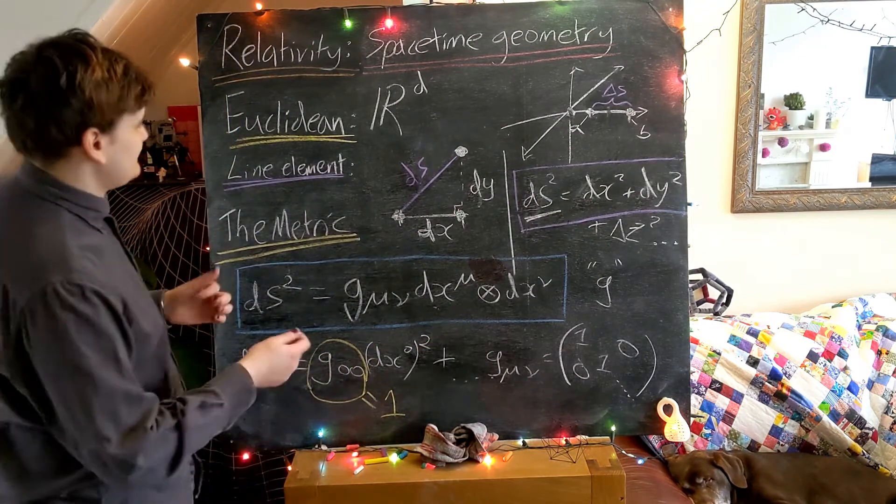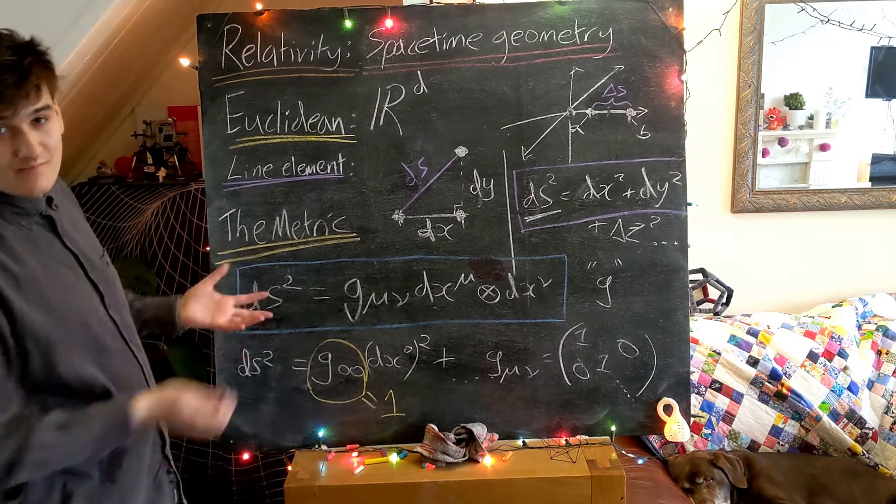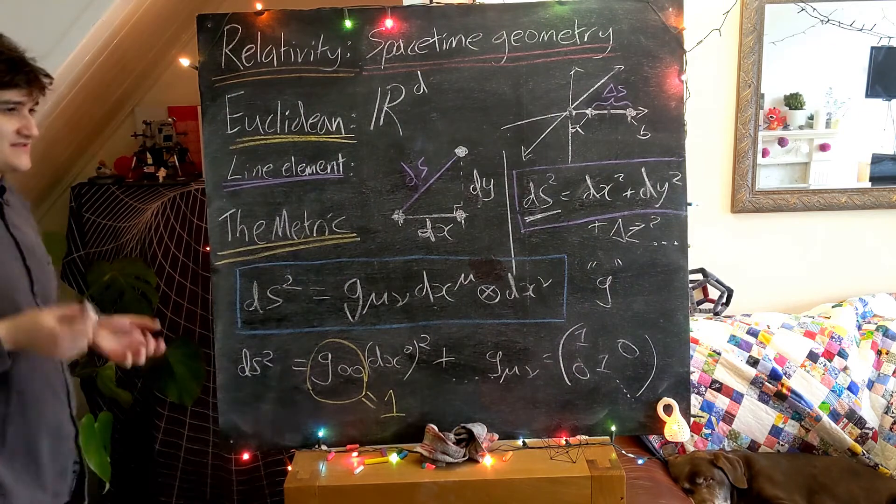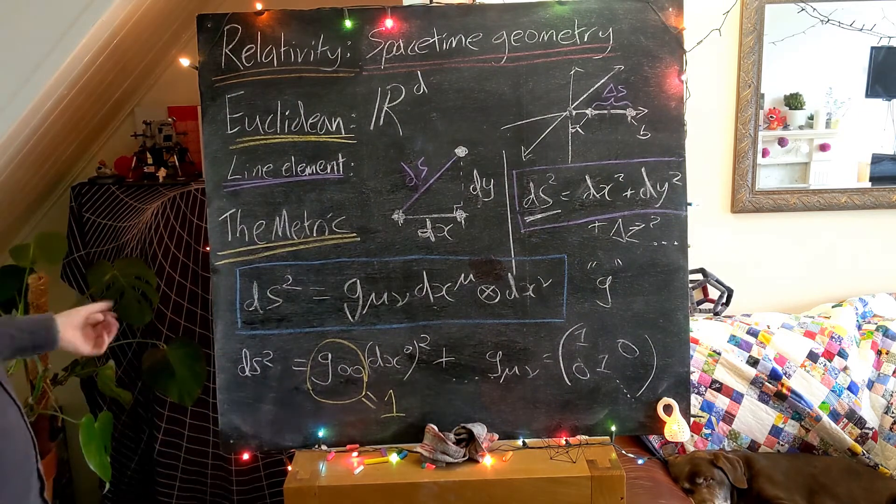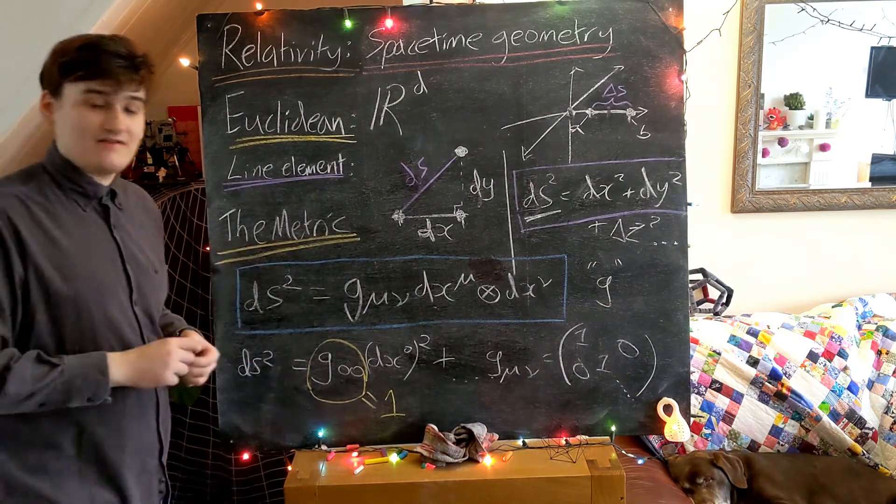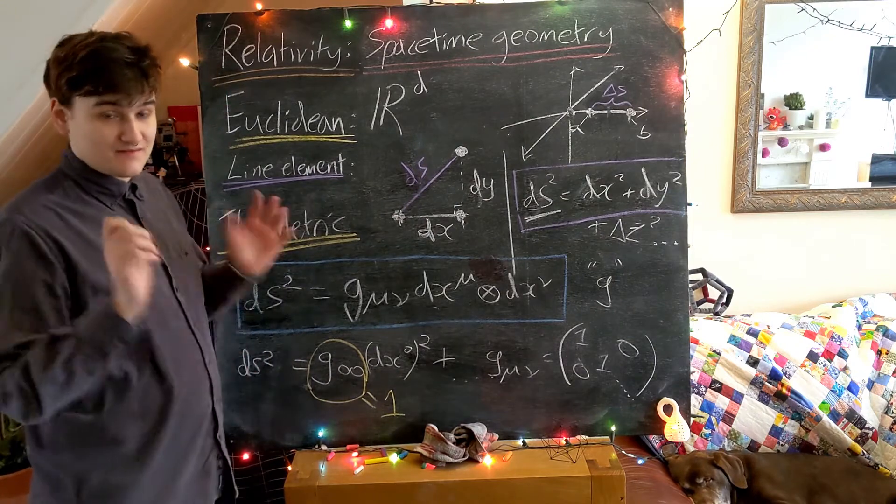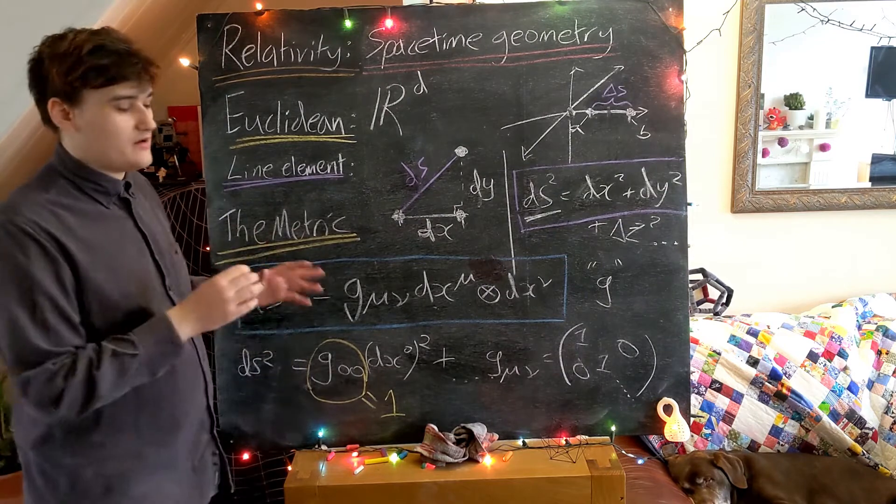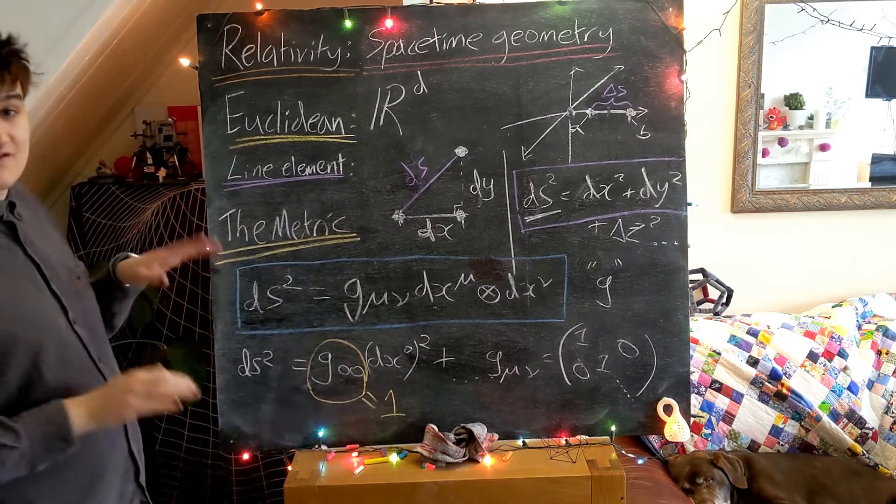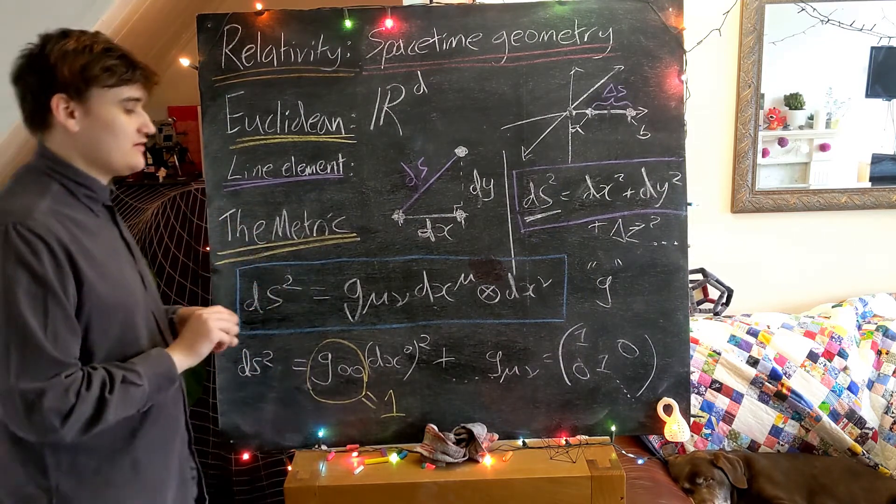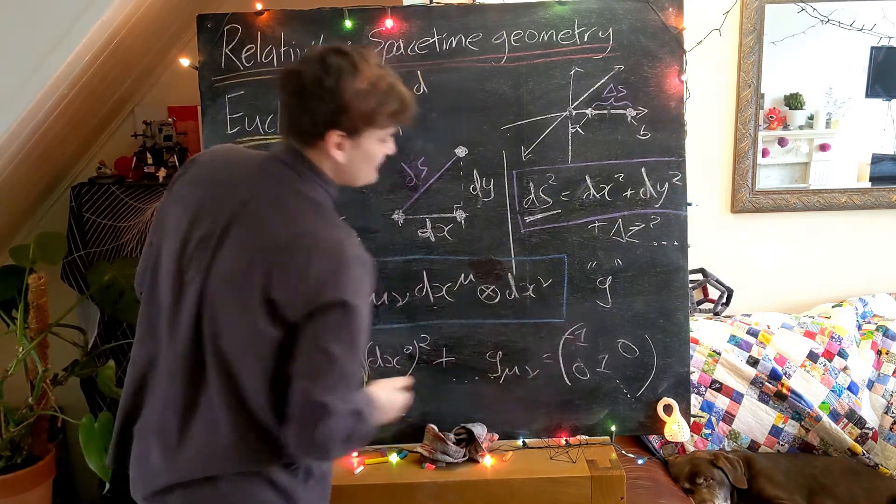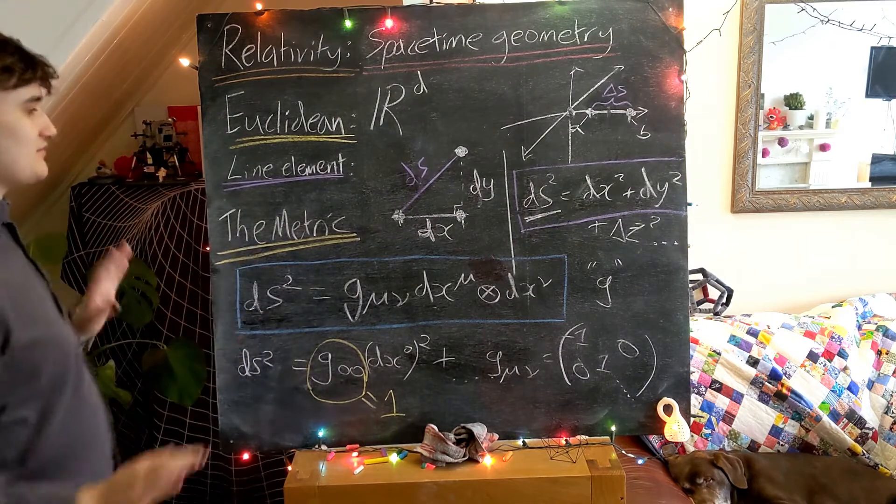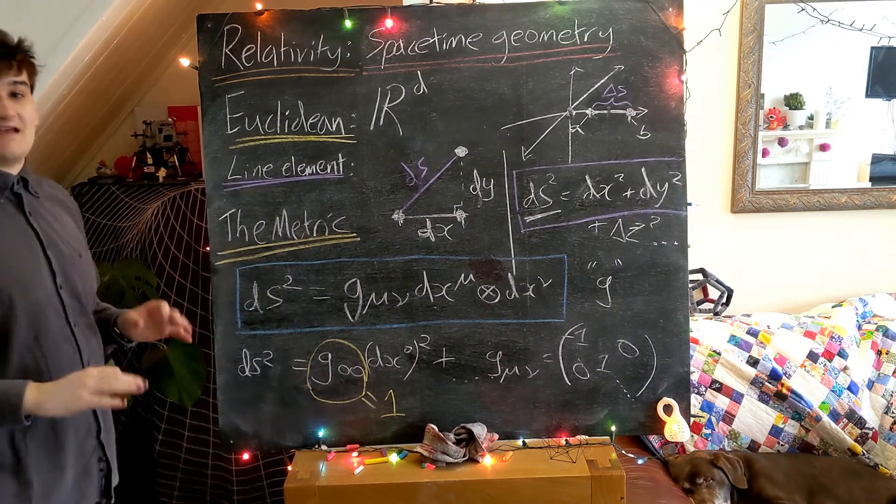So in the case of Euclidean geometry, the metric tensor components are just all trivial. They're just equal to 1. As we're going to see as we move into special relativity, it's going to be fairly similar. And they are going to be still trivial, except we're now going to realize that there's going to be a difference in sign between some of the components. One component is going to have a minus sign. And that's going to have drastic consequences for the geometry, as we're going to see shortly.